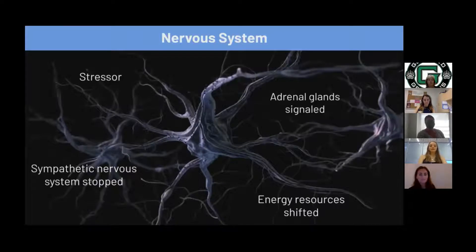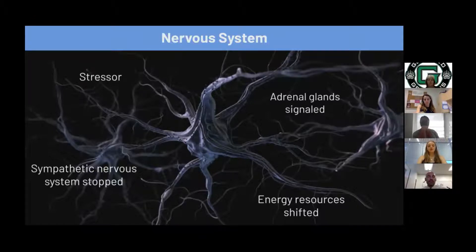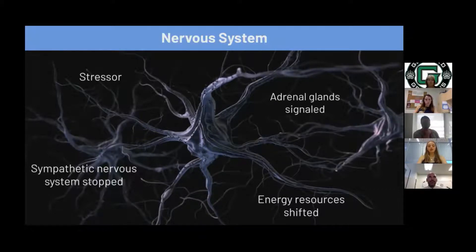Finally, with the nervous system — in stress, the sympathetic nervous system, which is a subdivision of the autonomic nervous system, shifts its energy resources to fight or flight mode. The sympathetic nervous system will signal the adrenal glands to produce hormones, which can cause changes in heart rate, respiration rate, and blood pressure. The sympathetic nervous system activation is temporary and will go away with the stressor through the parasympathetic nervous system. But over-activation of the nervous systems will drain the body and will affect other body systems as well.